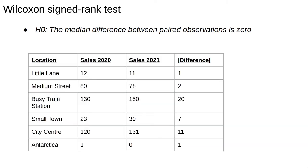To perform this test, we first calculate the absolute value of the differences. We then rank them from largest, rank 1, to smallest, where we use average ranks to break ties.